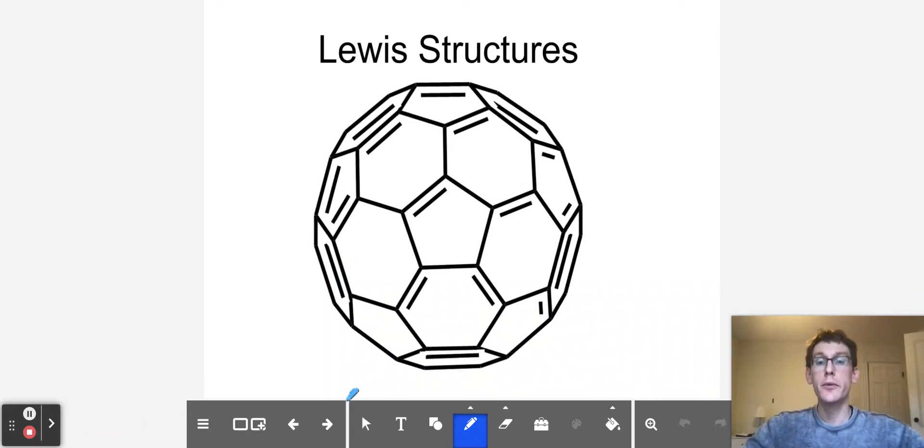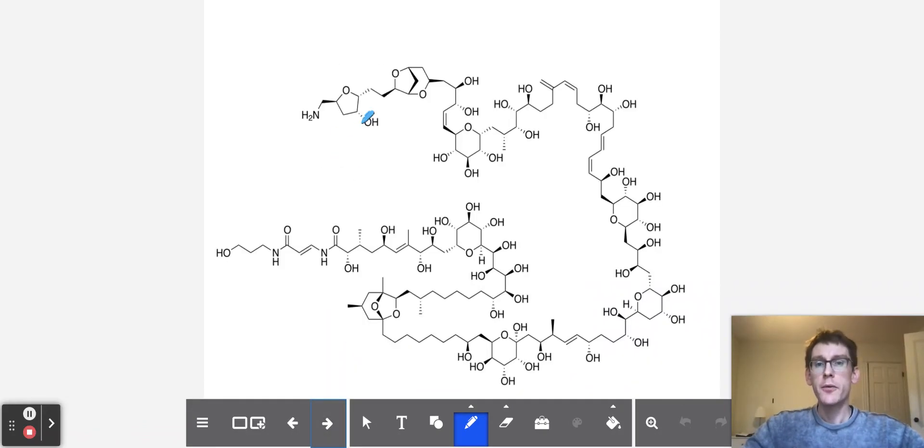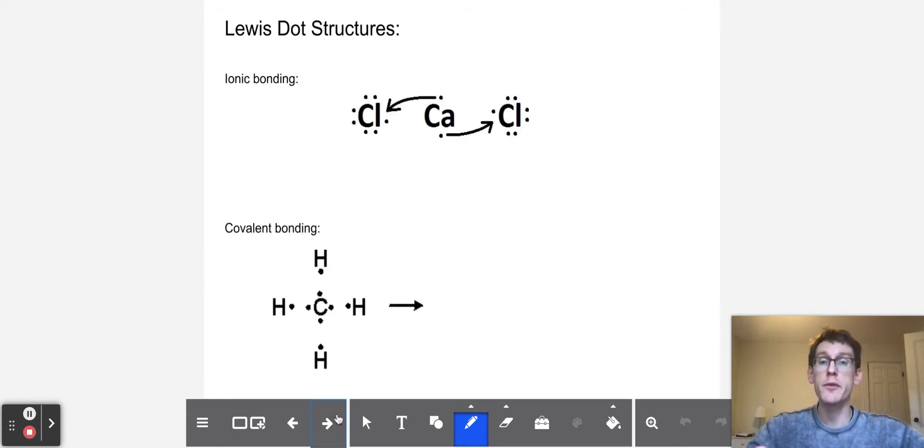In this video, we're going to learn about Lewis structures. Ionic compounds are made from metals and non-metals, and typically they're rather small and simple. Covalent compounds can be quite big. They can be small, but they also can be enormous, as in the case of this example right here. And so we have what are called Lewis structures that help represent them.